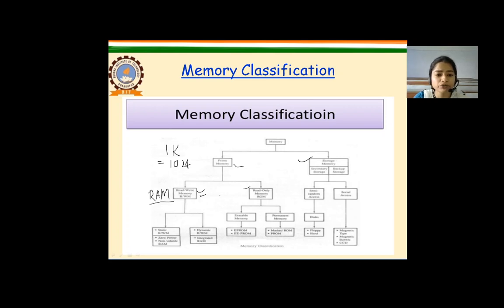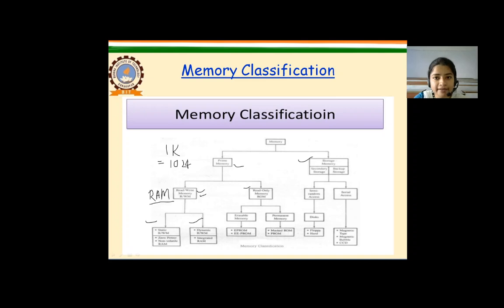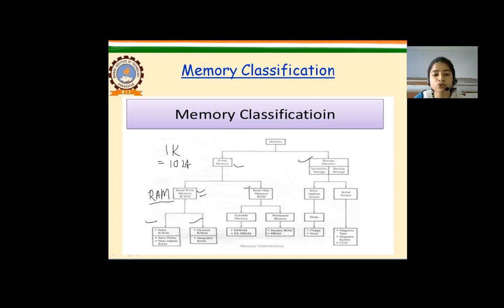Random access memory is of two types: static RAM and dynamic RAM. Static RAM is made up of flip-flops. Each flip-flop is the basic cell and can store one bit of information in the form of voltage. Each memory cell of SRAM requires six transistors. Because of this, the memory chip of SRAM has low density but high speed.